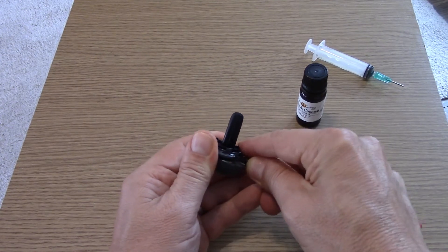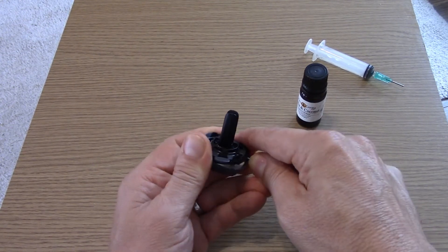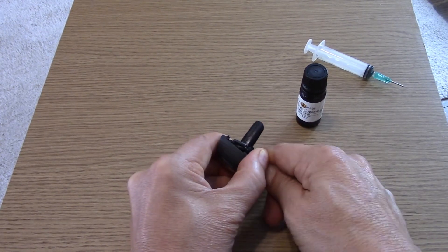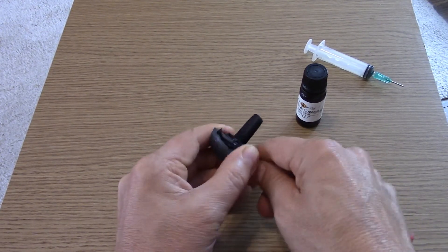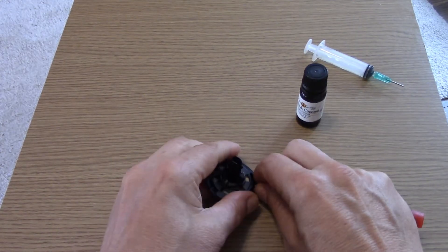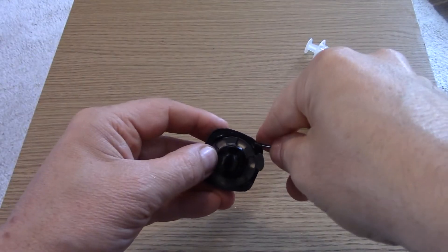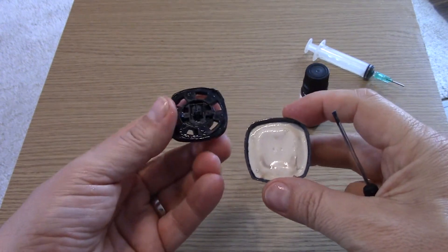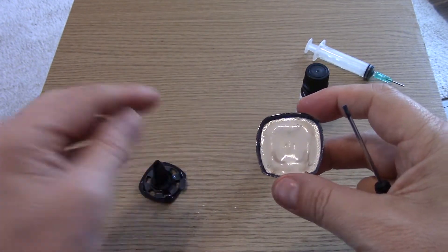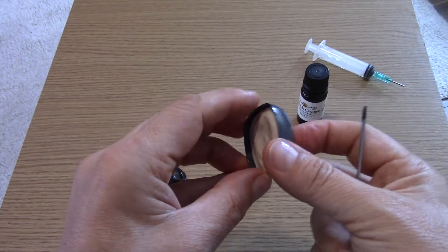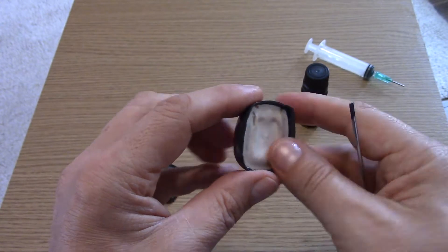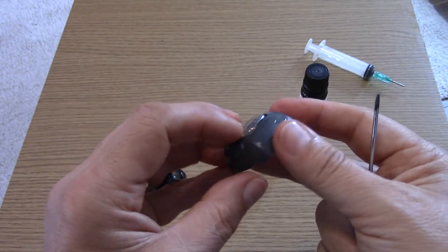There we go, just move the screwdriver around. There we go, so that's the backing bit, and then this is the container that contains the fluid. Just going to pop that out.